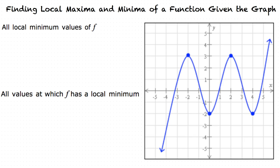How do we determine what is a local minimum value of the graph? We can determine if a point is a local minimum by looking at how the graph changes directions. With a local minimum, the graph changes directions from decreasing to increasing. Looking at our graph, we can see that there are two points where the graph changes from decreasing to increasing.